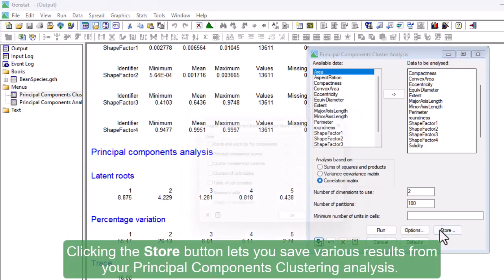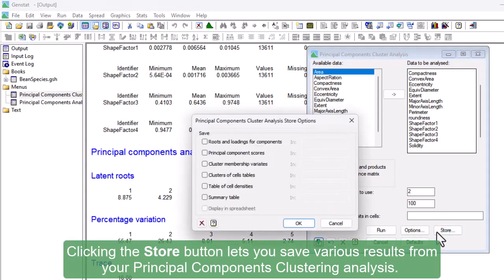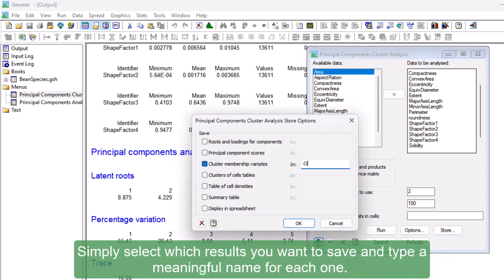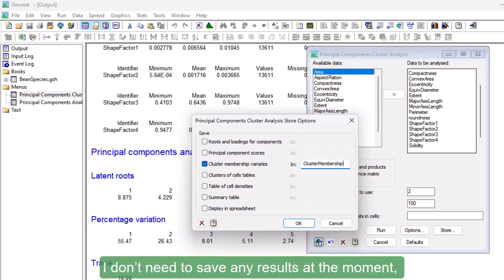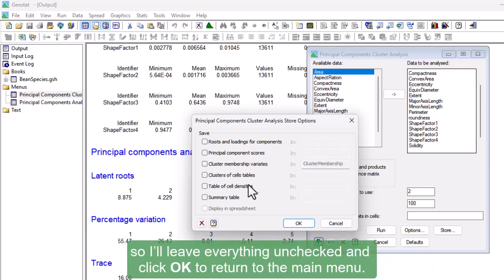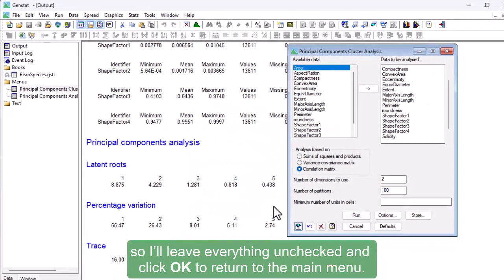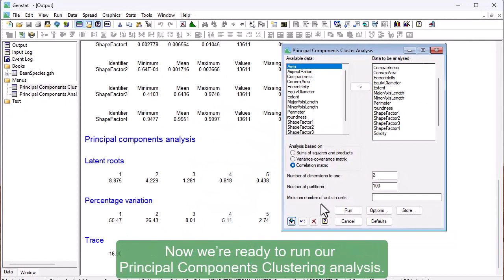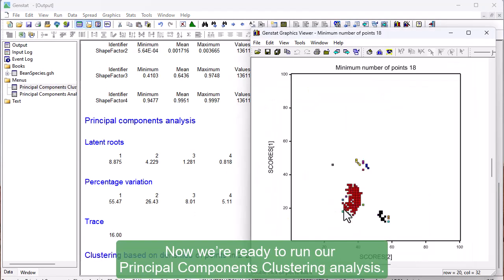Clicking the Store button lets you save various results from your Principal Components clustering analysis. Simply select which results you want to save and type a meaningful name for each one. I don't need to save any results at the moment, so I'll leave everything unchecked and click OK to return to the main menu. Now we're ready to run our Principal Components clustering analysis.